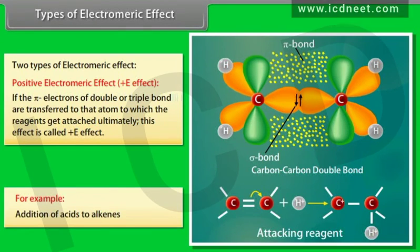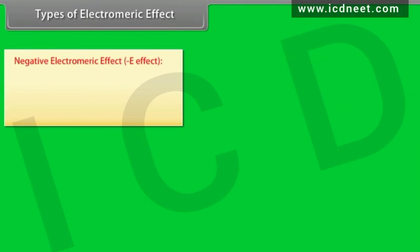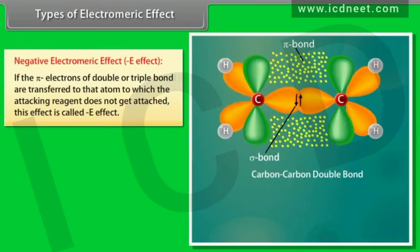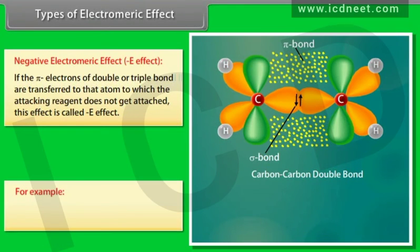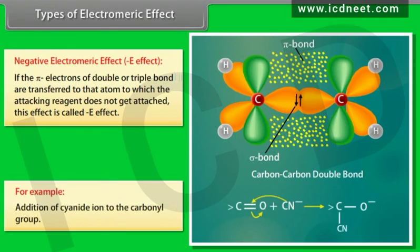An example of positive E effect is the addition of acids to alkenes. Negative electromeric effect (negative E effect): if the pi-electrons of a double or triple bond are transferred to the atom to which the attacking reagent does not get attached, this effect is called negative electromeric effect — for example, addition of cyanide ion to the carbonyl group.